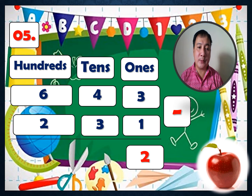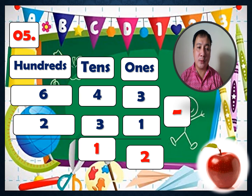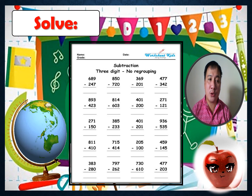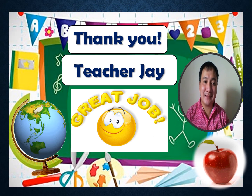Practice number five: 643 minus 231. Ones: 3 minus 1 equals 2. Tens: 4 minus 3 equals 1. Hundreds: 6 minus 2 equals 4. The answer is 412. Now solve your worksheet.